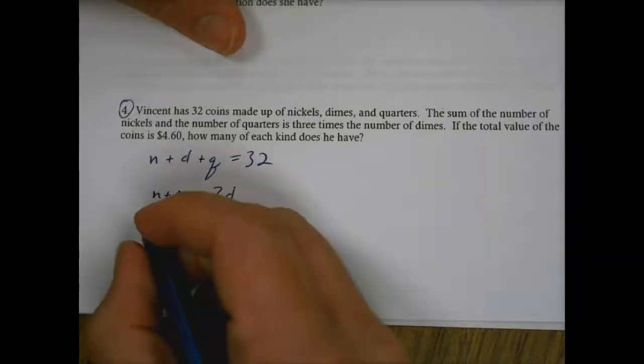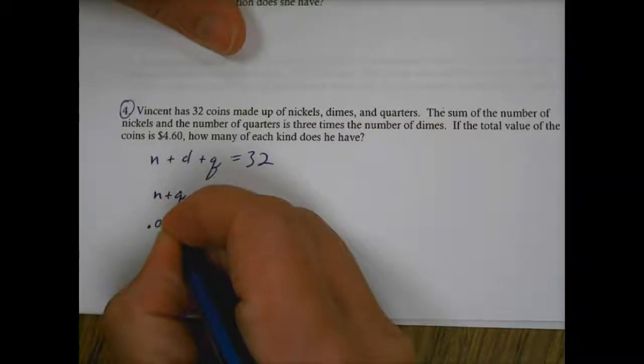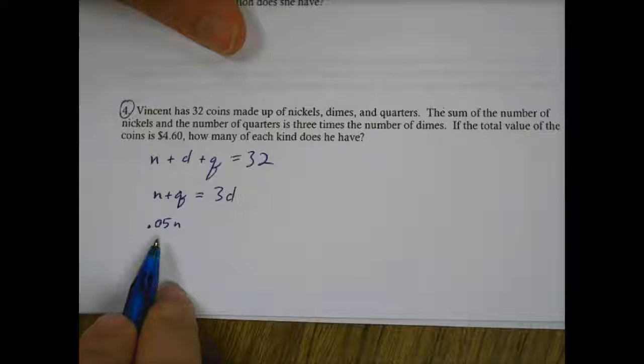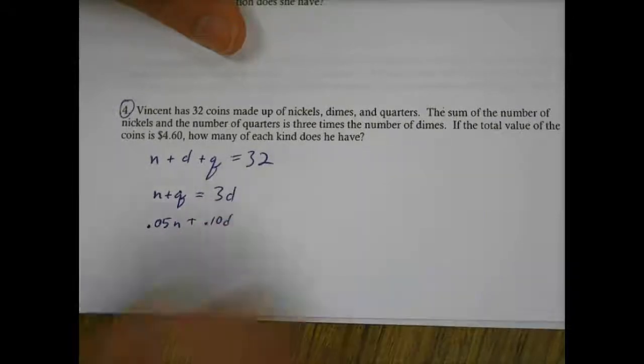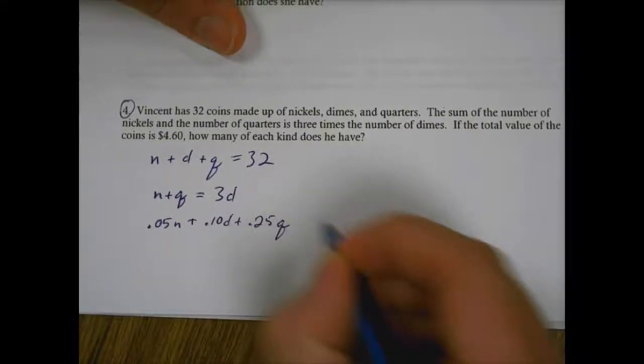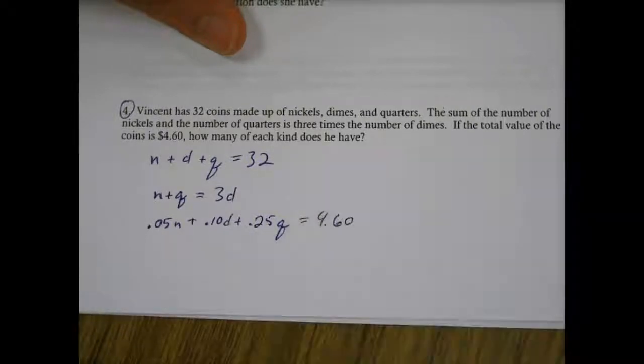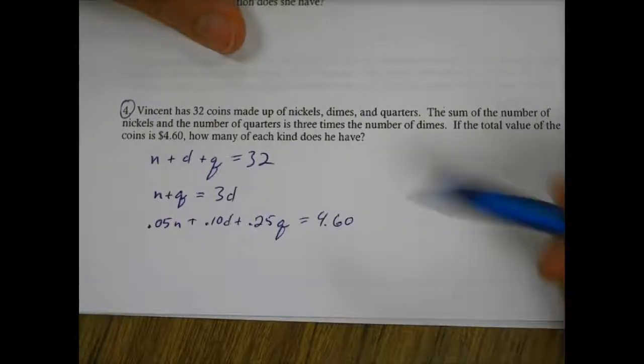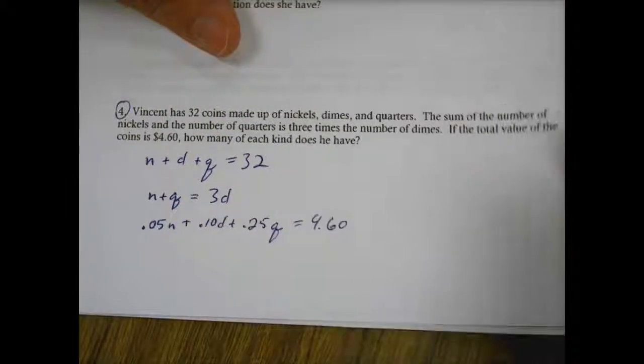You're going to have to remember the nickel is worth five cents. So five cents times every nickel we have plus 10 cents times every dime we have plus 25 cents times every quarter that we have. This total amount of money is equal to $4.60. So again, we have three equations with three variables each. Don't worry about solving for right now. We'll show you how to do that in just a little bit. Just set these up. Set all of them up the best you can.